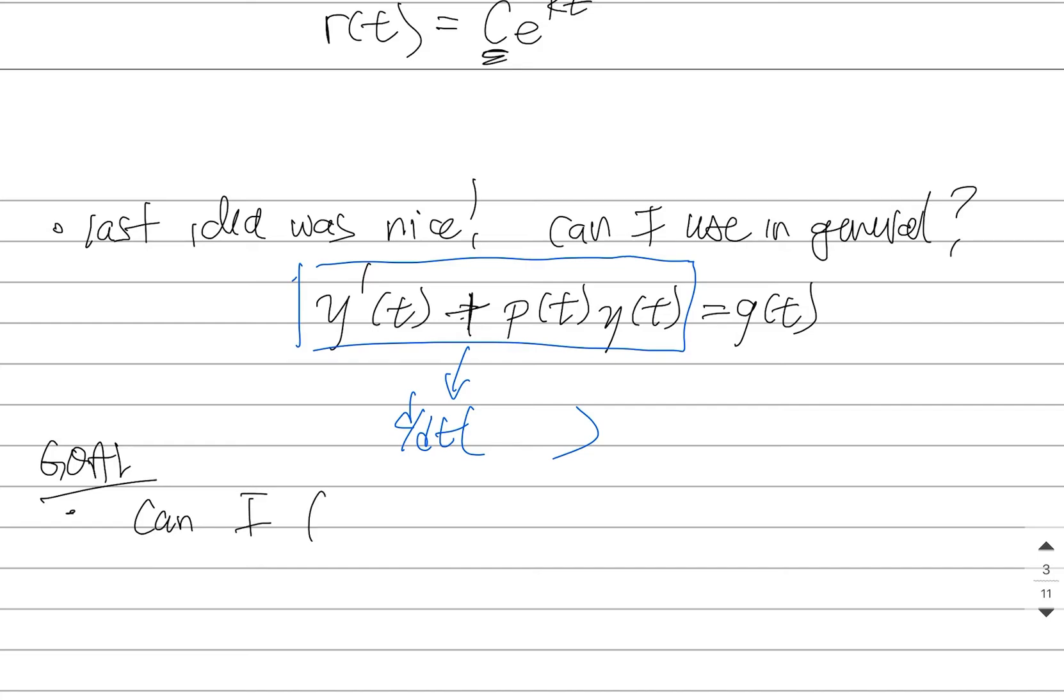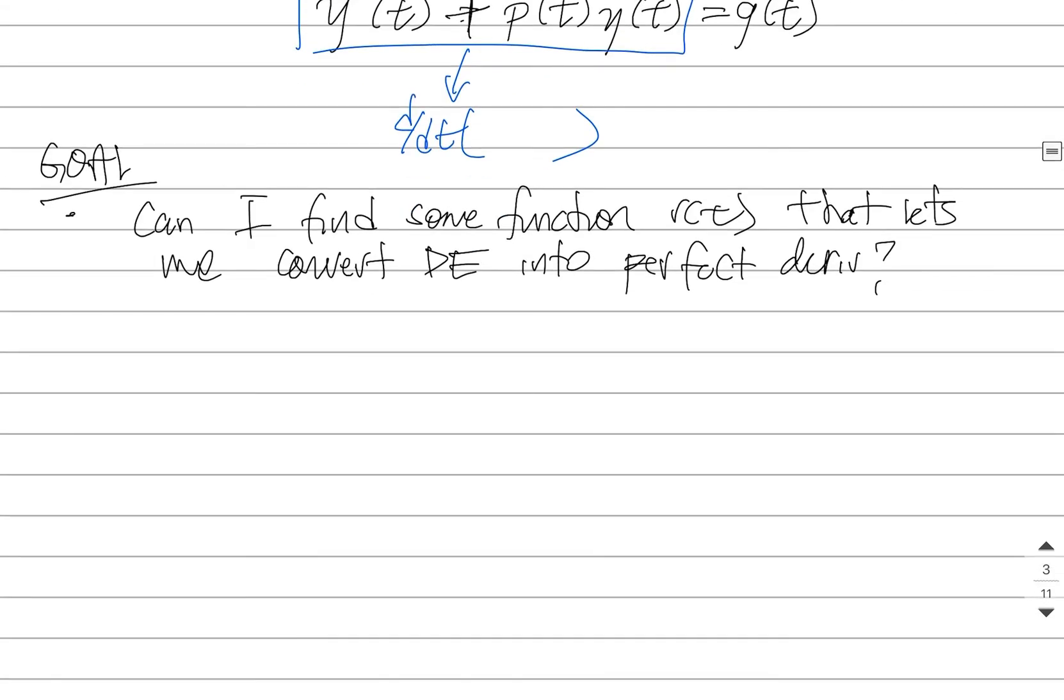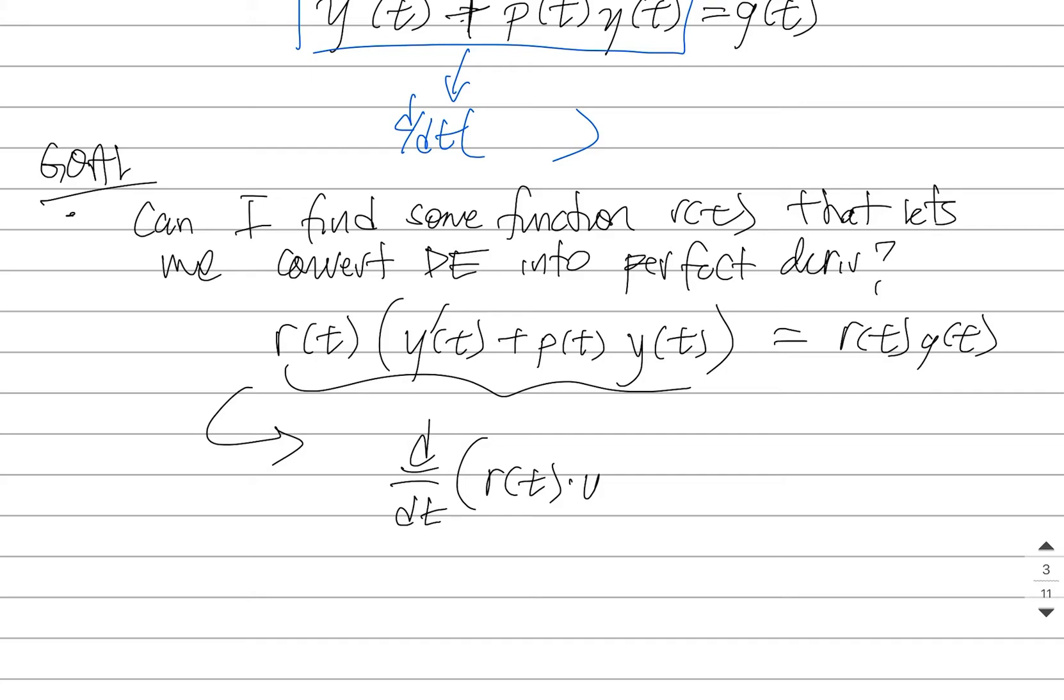I'm going to say this. Can I find some function r(t) that lets me convert this DE into a perfect derivative? And so what I mean by that is, is there some mystery function so that if I multiply it on all sides of this DE, so whatever I do to the left, I have to do to the right, is it possible for me to turn this into something that is a perfect derivative? And I'm just going to say, well, maybe it'll be a product of these two things.